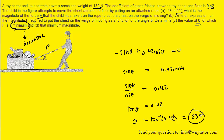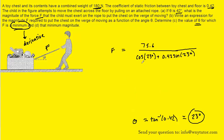For part d, we simply plug this angle value back into our force function. After plugging 23 degrees into the force equation, you should get a force of roughly 69.6 or 70 newtons. So this would be the correct answer to part d.